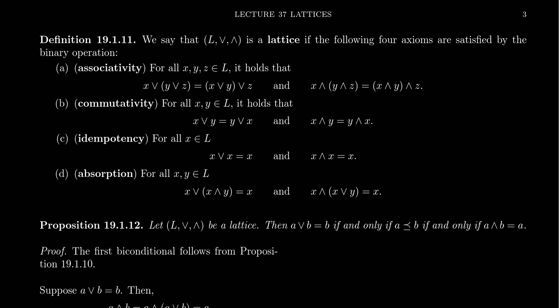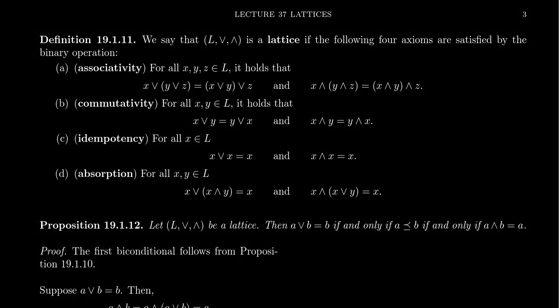In the previous video, we introduced the notion of a semi-lattice, which is basically half of a lattice. So it seems appropriate that we should define what a lattice is. If a semi-lattice is to a group, then a lattice is to a ring. That is, a semi-lattice has one binary operation satisfying certain axioms, while a lattice will have two binary operations satisfying certain axioms.